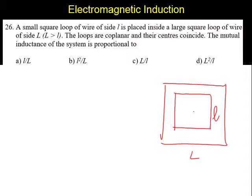In this case, the mutual inductance general relation is M equals μ₀ times N₁, number of turns in the first one, times N₂, number of turns in the second, times the area of overlap divided by the area of the bigger coil.